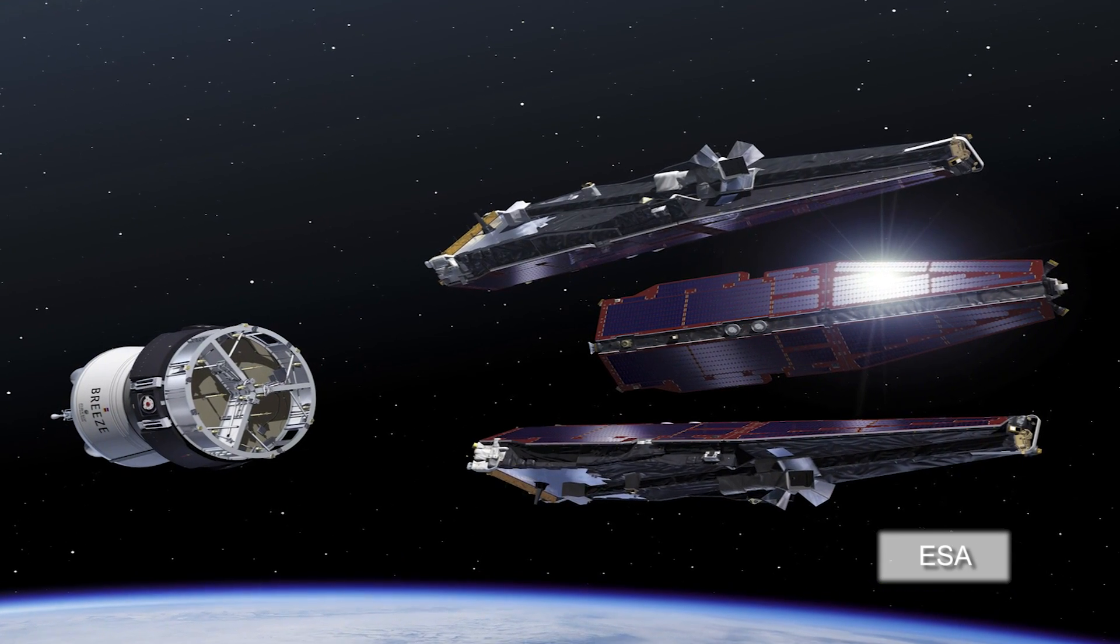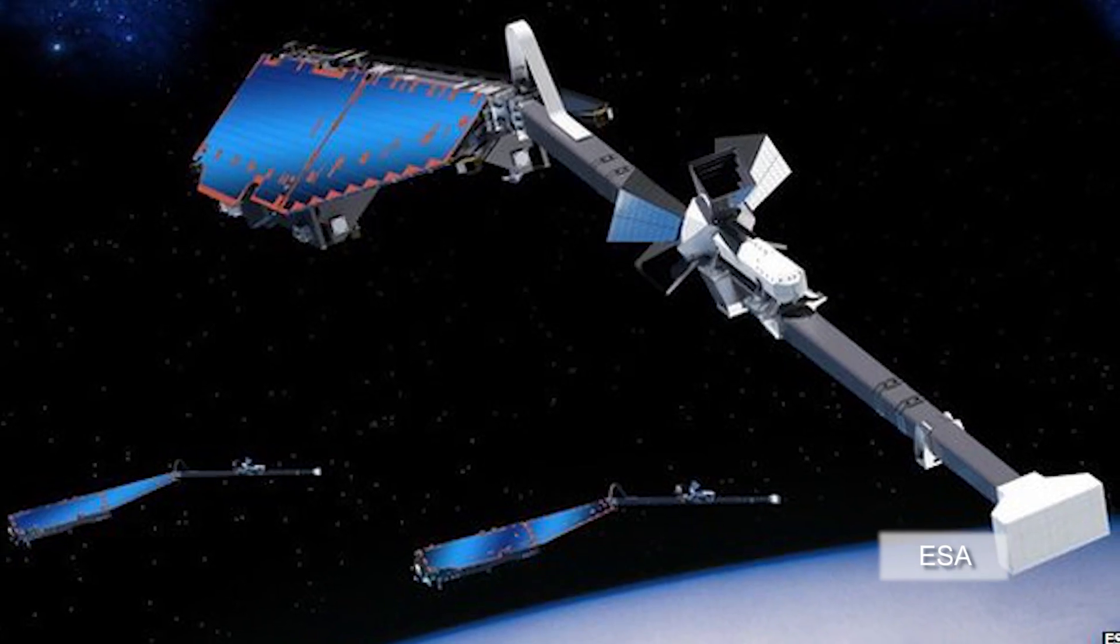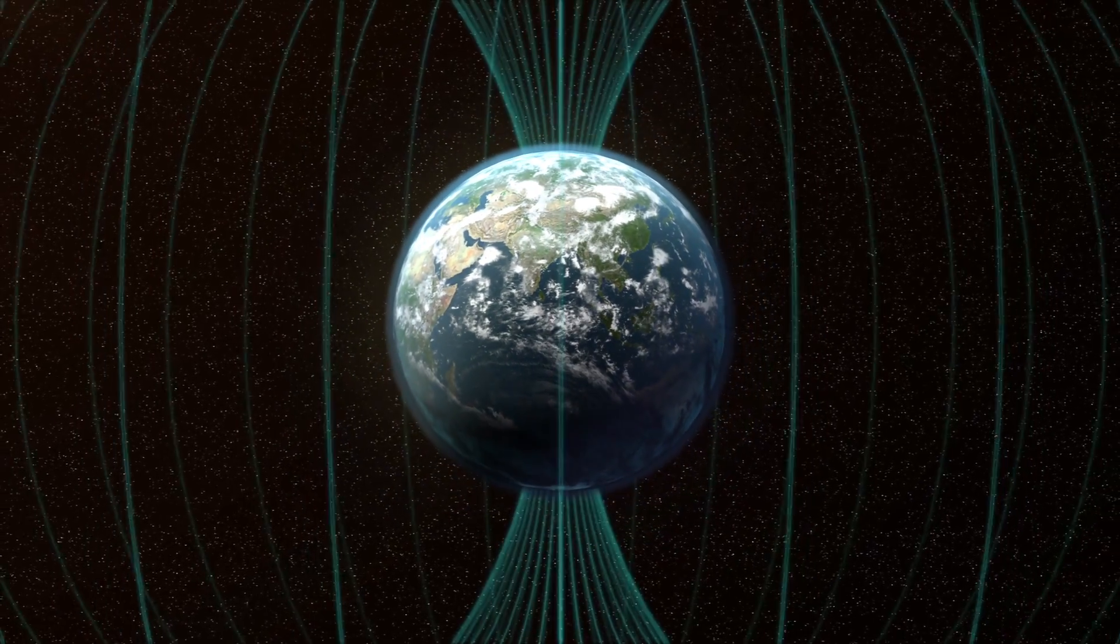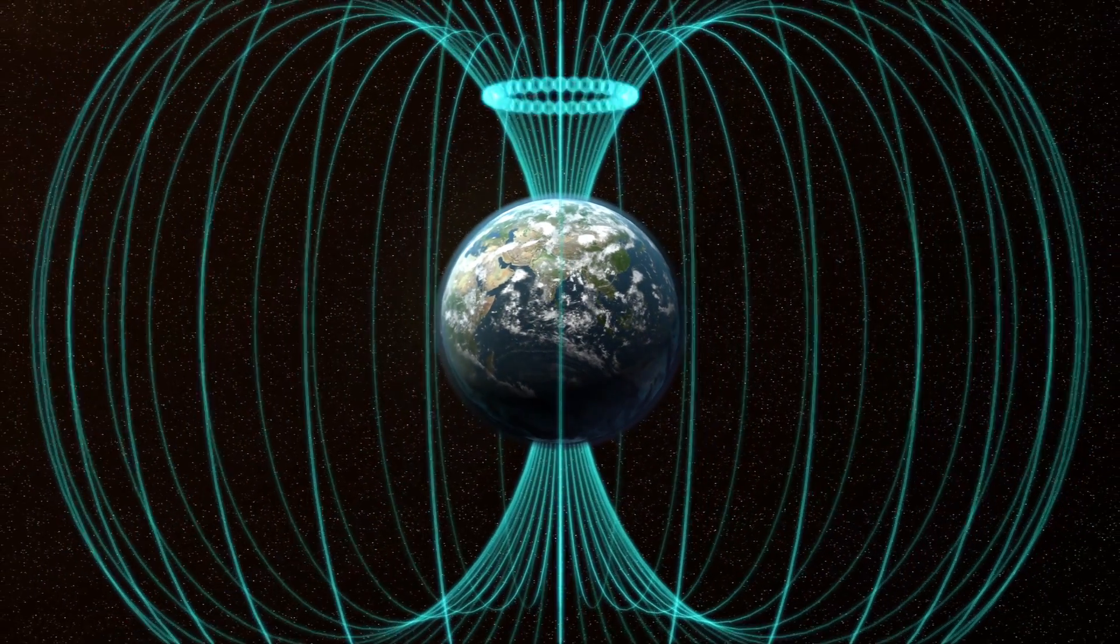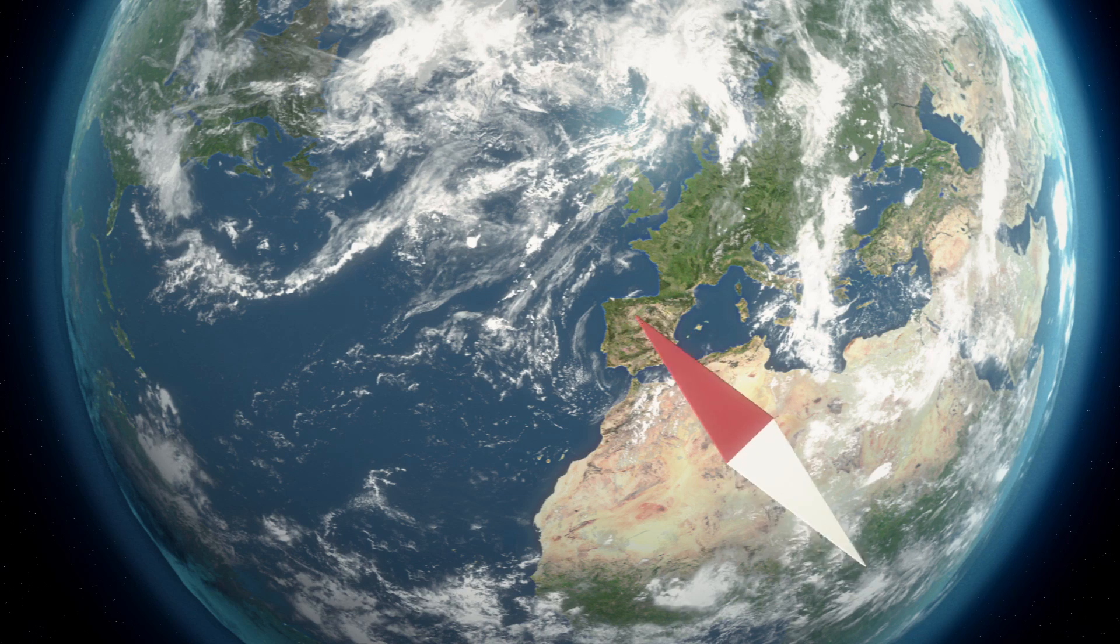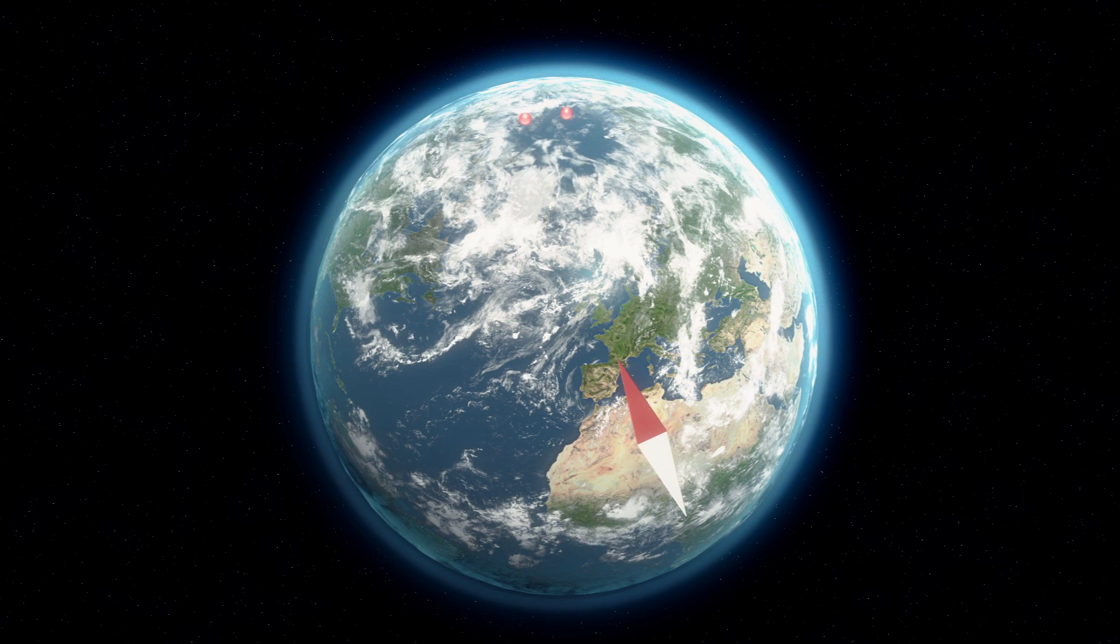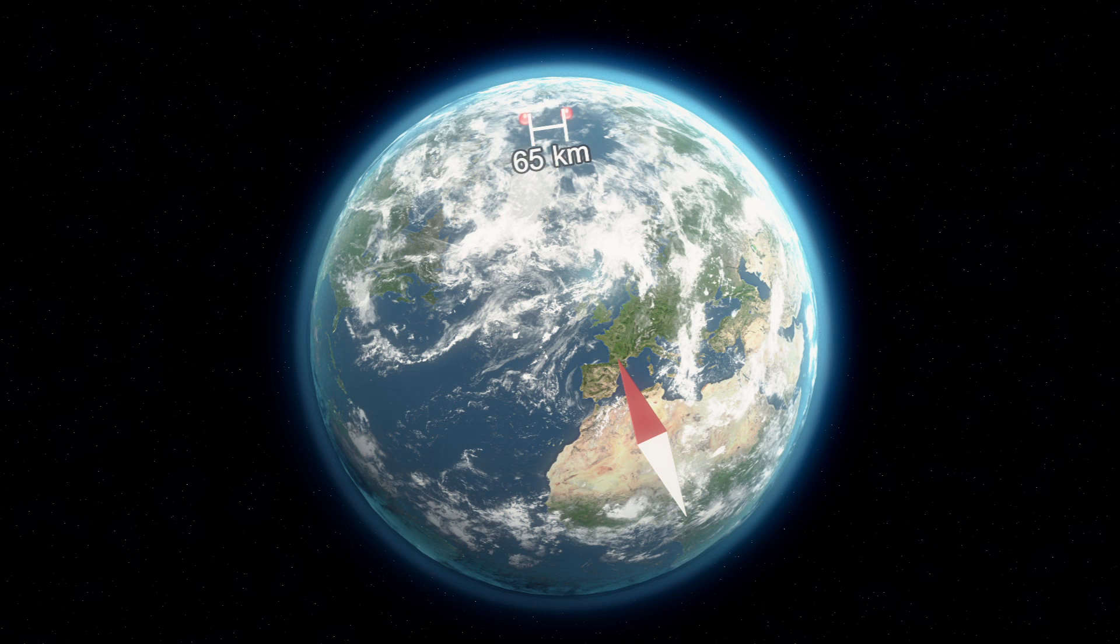The Swarm mission to explore the Earth's magnetic field was launched from Russia on November 22nd. The Earth's magnetic field has lost about 15% of its strength over the past 150 years. The magnetic north pole was moving at about 10 kilometers a year before 1994, but the rate has increased to around 65 kilometers a year since 2001.